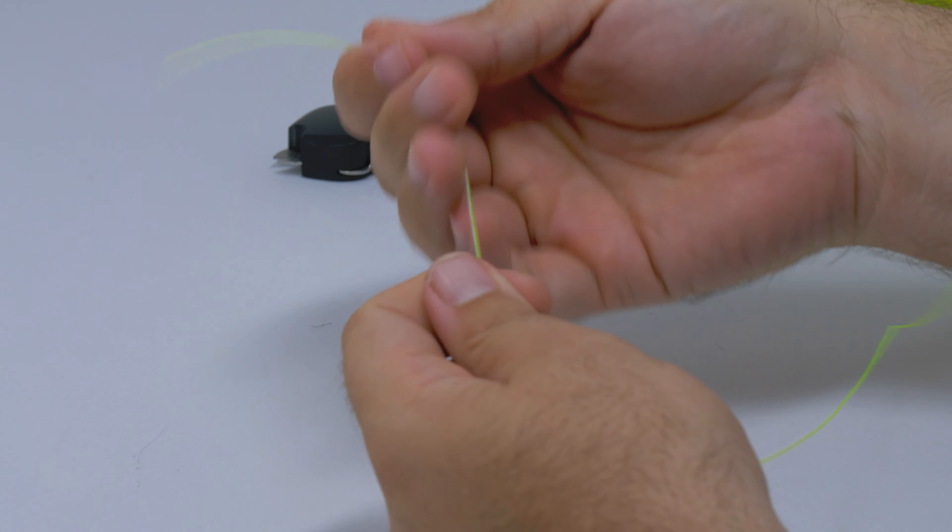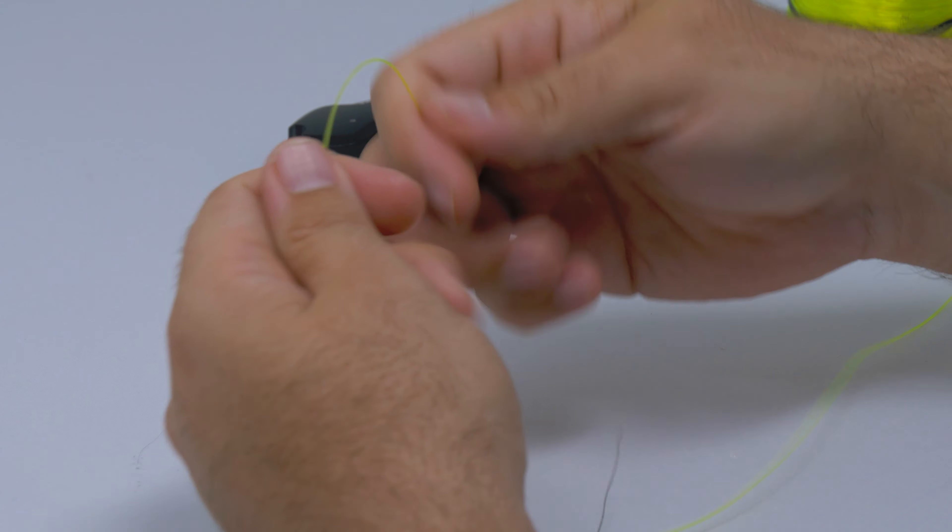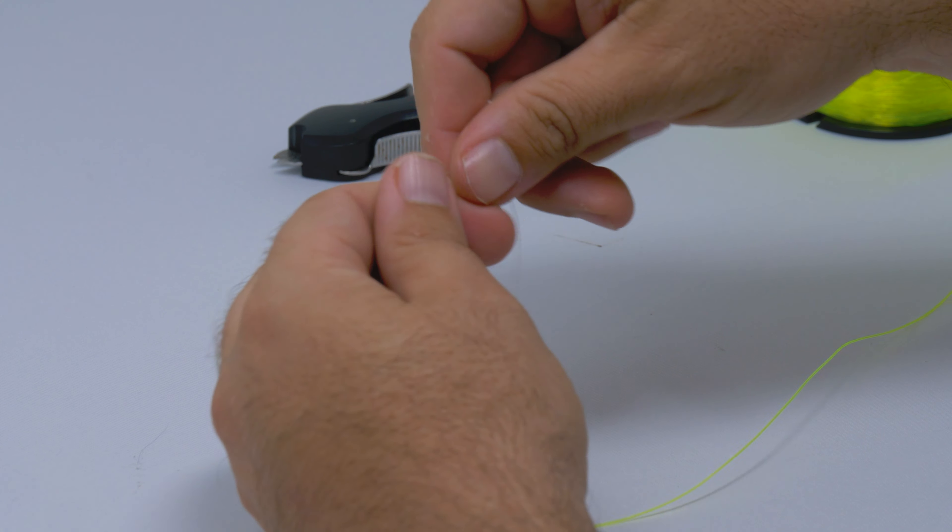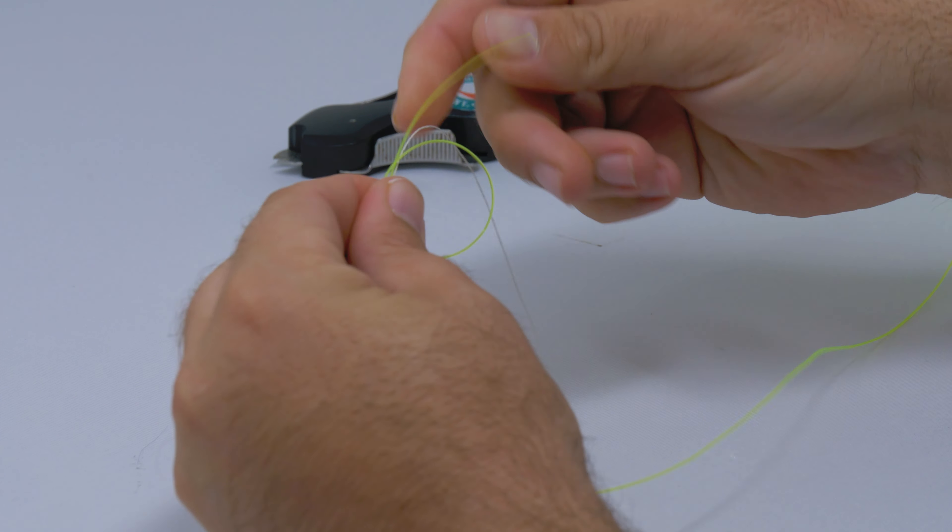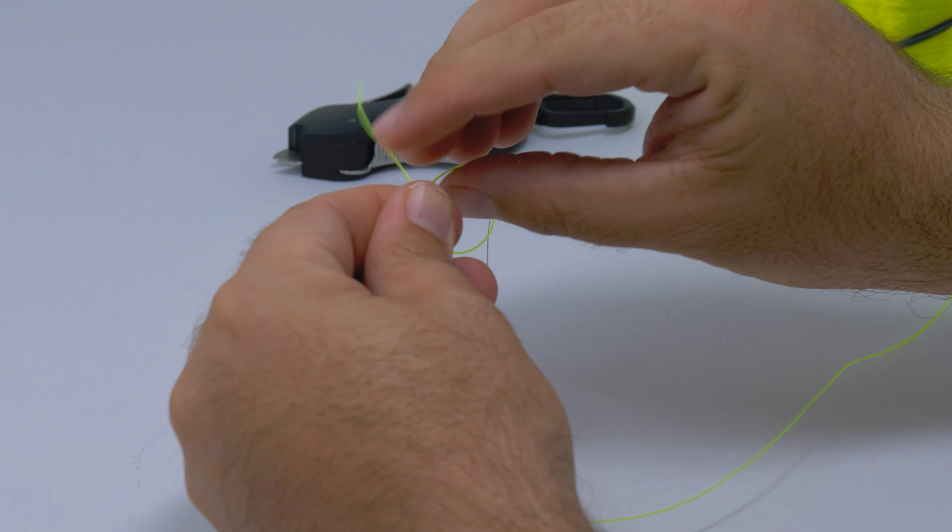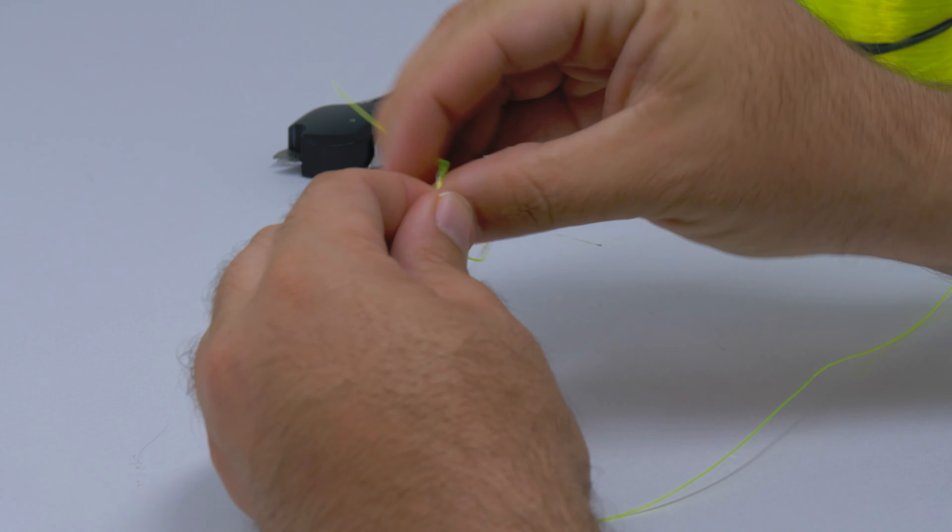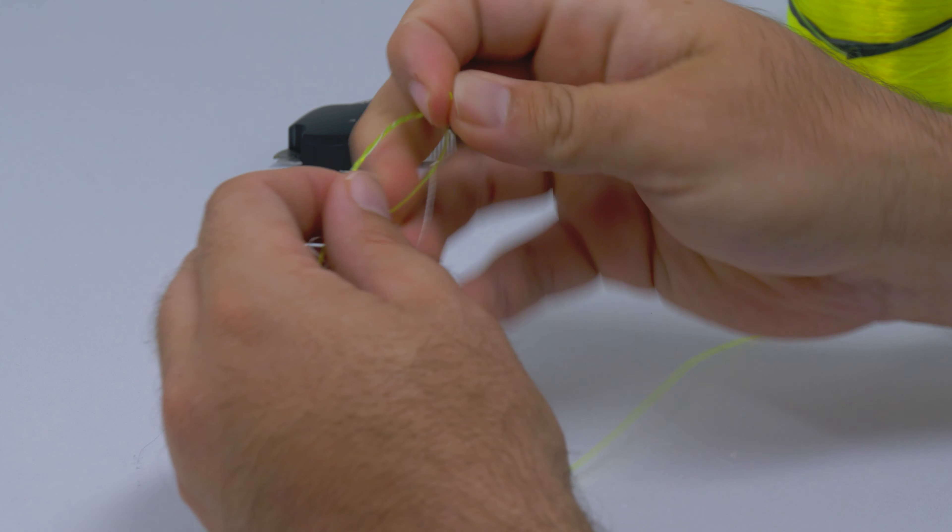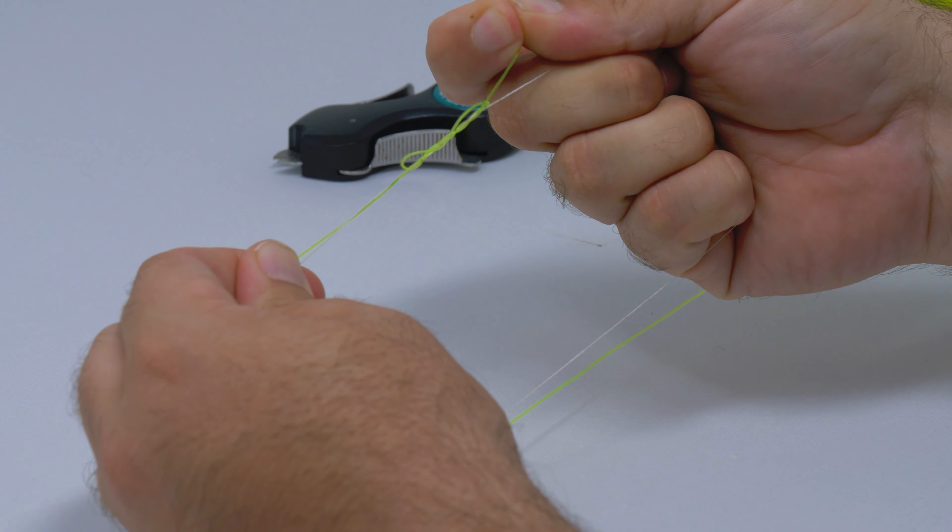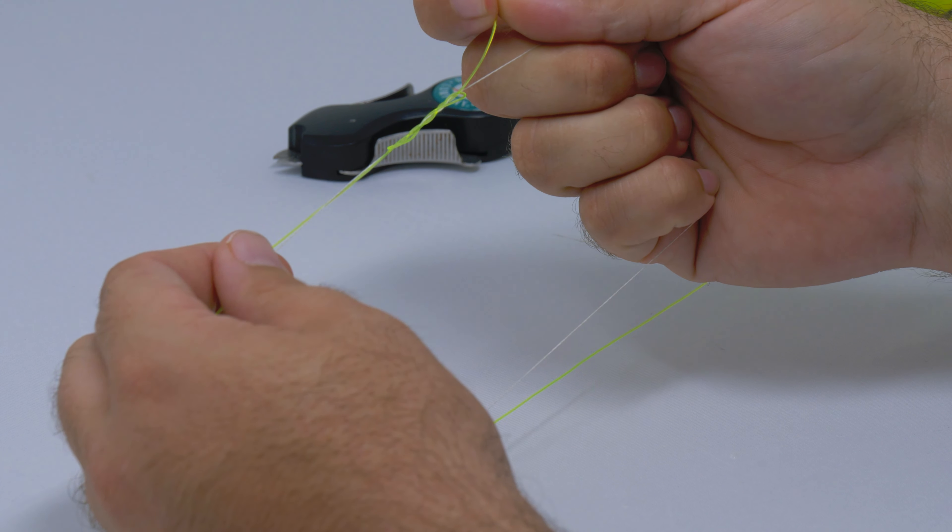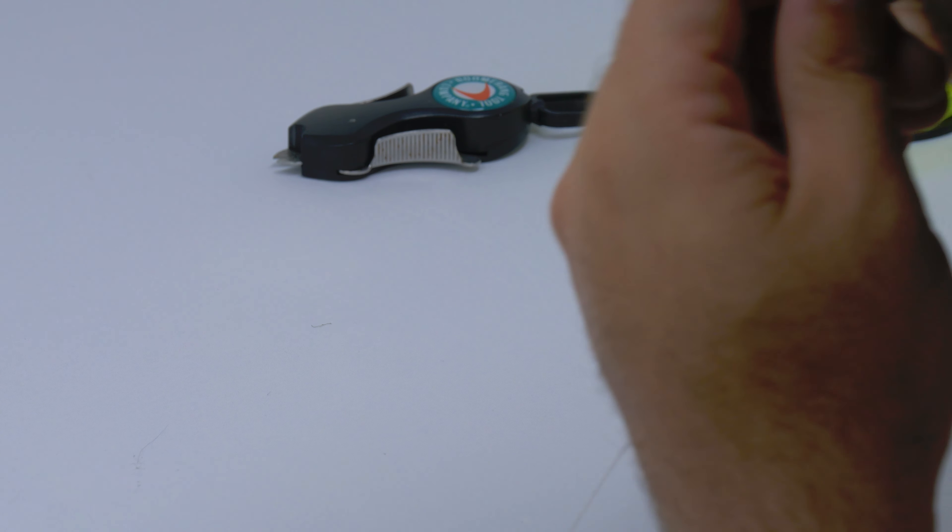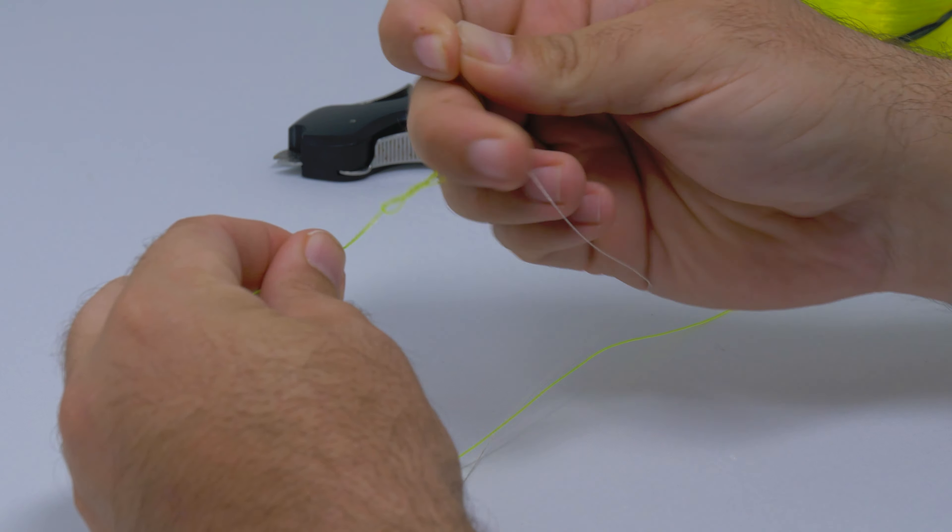Now I turn it around. I'm right-handed, so I do the same exact thing by creating a loop with the mono. Then all you have to do is wrap this about four times—one, two, three, four. You could go five if you want. At that point, moisten this and then pull it tight.